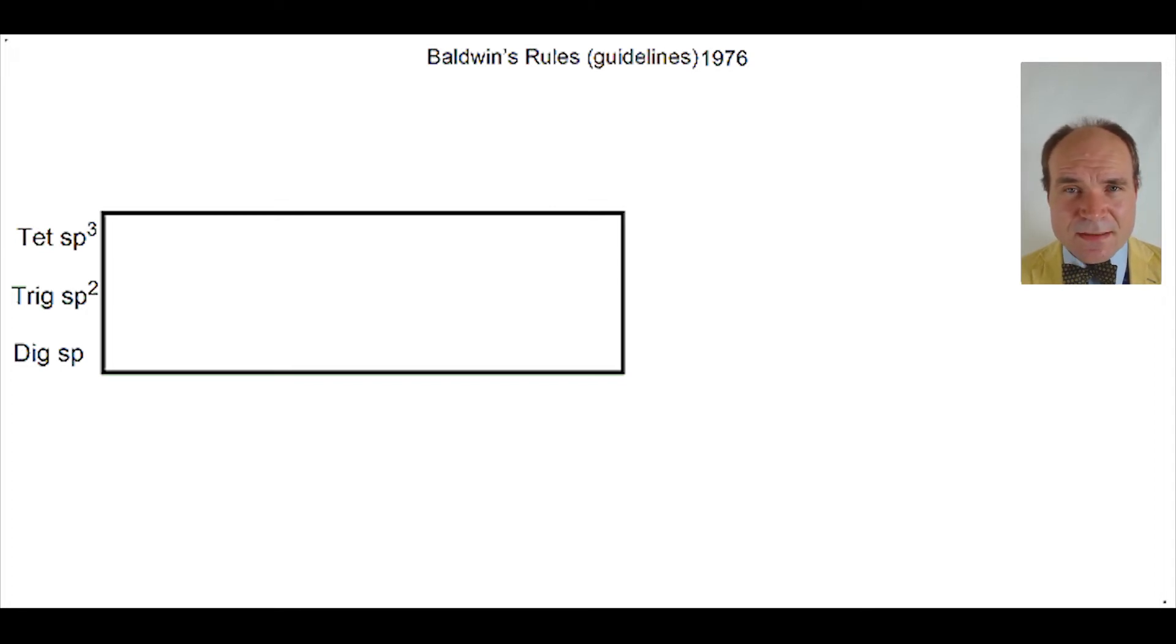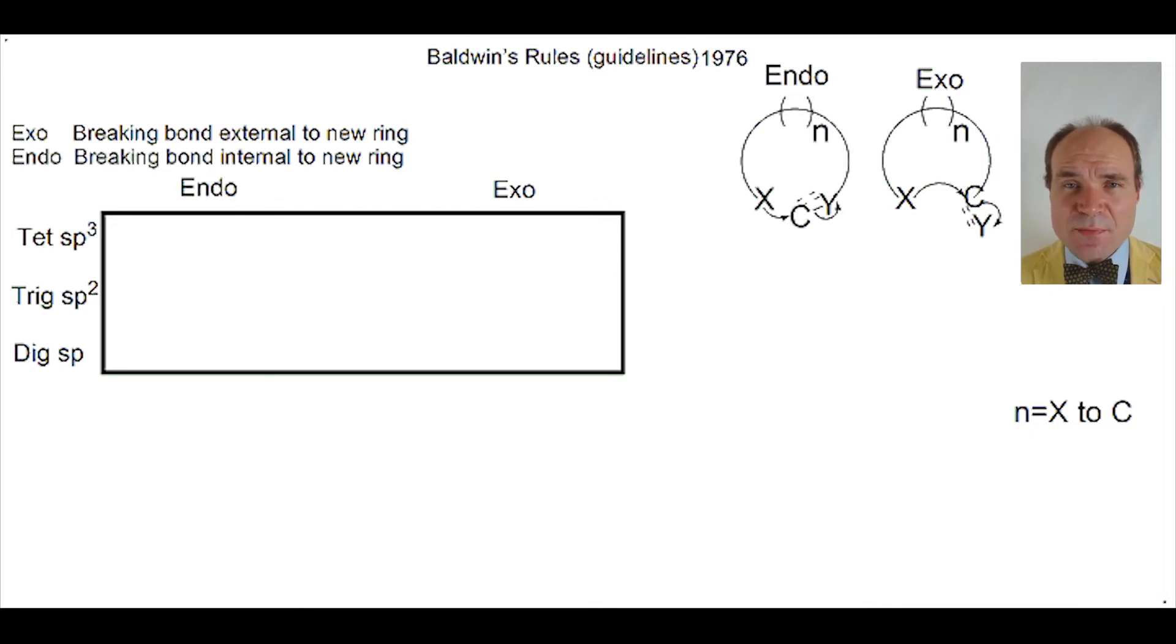A second factor is whether the reaction is exo or endo. So what do we mean by that? Well exo is where a bond is broken external to the ring and endo is where a bond is broken internal to the ring.